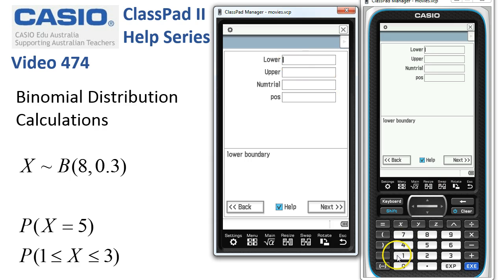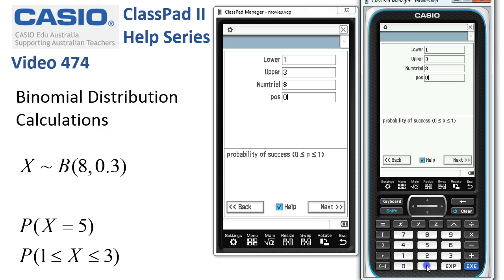This time the lower is 1, the upper is 3, and then the number of trials is still 8 with the probability of success 0.3.